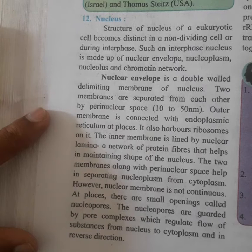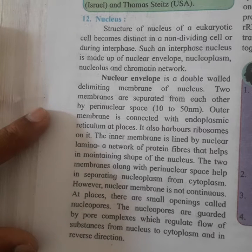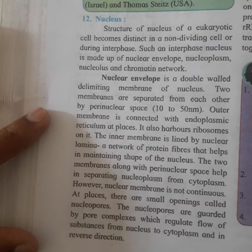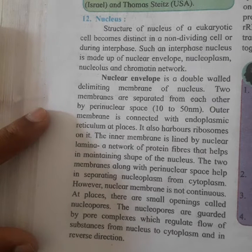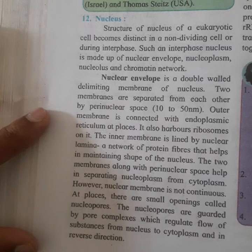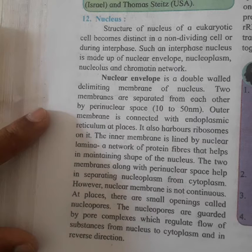The nucleus is a very important part of the cell because all the biological activities are coordinated by the nucleus. That is why the nucleus is said to be the brain of the cell — all biological activities are coordinated by the nucleus. The nucleus is one of the three basic components of the eukaryotic cell.